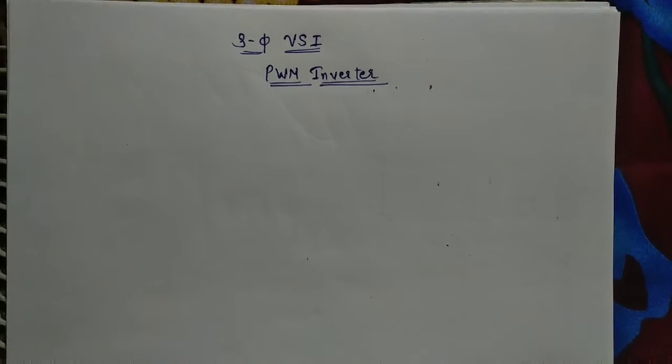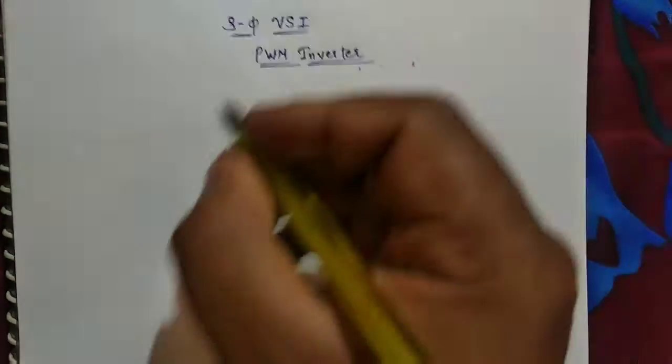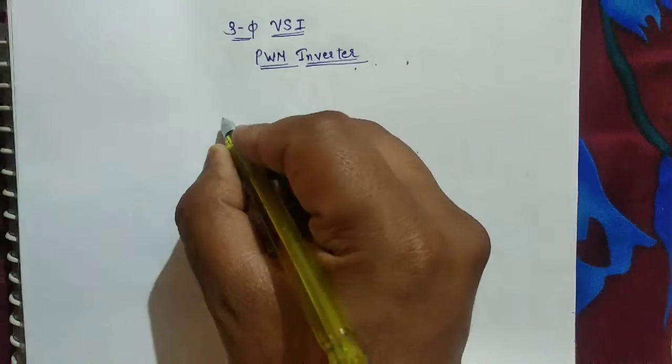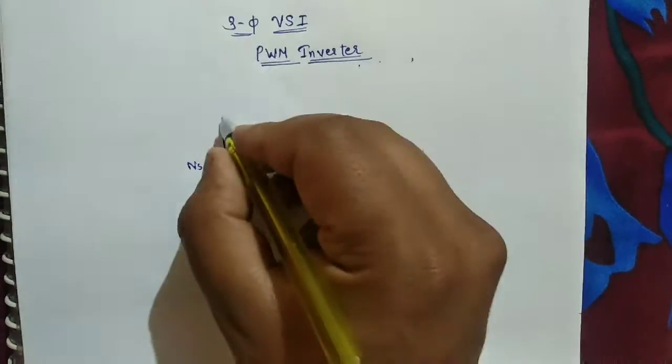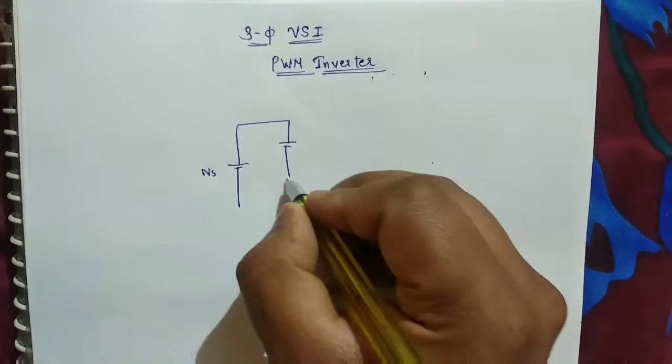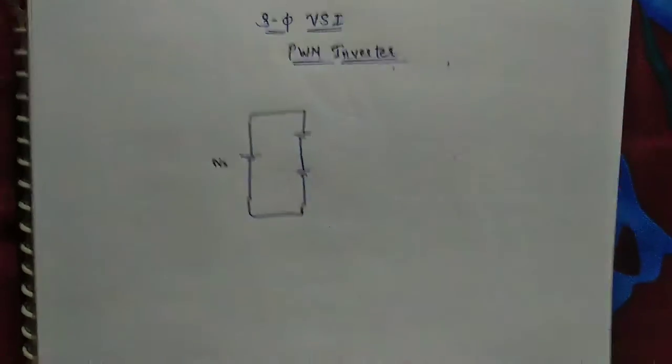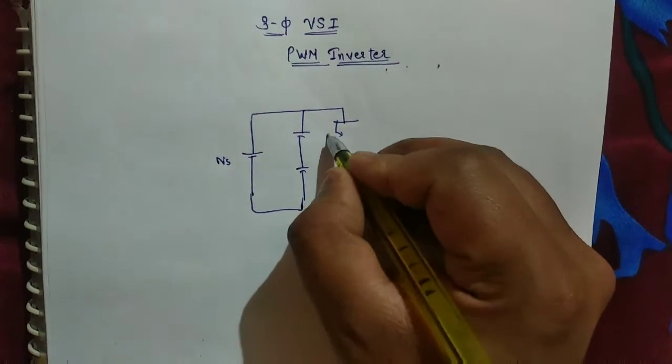Hi friends, welcome back. Today's topic is three-phase PWM inverter. In this circuit diagram will be same - a voltage source, a capacitor, then six switching devices: S1, D1, S2, D2.